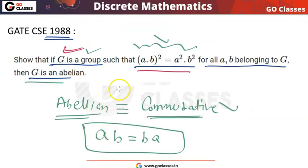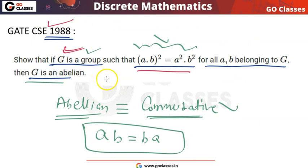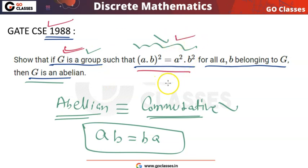So this completes the proof. This is a GATE 1988 subjective question. We have proven that any group which satisfies the property (ab)² = a²b² is abelian, and we have done so by two methods.